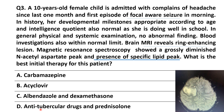The D option is anti-tubercular drug and prednisolone. According to the MRI finding of a ring enhancing lesion, it suggests the patient is having tuberculoma. To differentiate tuberculoma and NCC, if there is a small ring enhancing lesion without or with minimal perilesional edema, we go for MR spectroscopy. If a lipid peak is present, it suggests the patient is suffering from tuberculoma — this is a specific test. So the right answer is anti-tubercular drug and prednisolone.